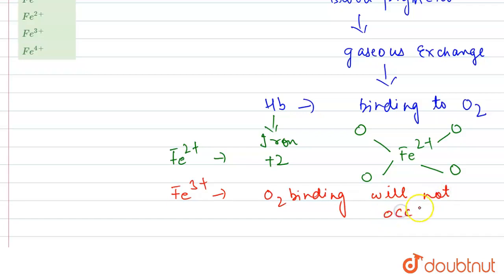Fe³⁺ will not allow the oxygen to bind with it, and this will not allow the gaseous exchange in the blood.